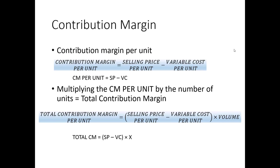To find the total contribution margin, we take the contribution margin per unit and multiply by the number of units sold. Contribution margin will also appear in management science 352, operations management, when you discuss constraint management and allocation of resources — and also in our upcoming linear programming module.